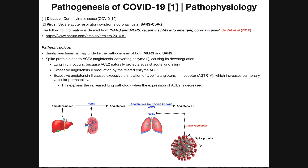The spike protein is going to have another function: it's going to bind to an enzyme called ACE2. ACE2 is an isoform of angiotensin-converting enzyme. When the spike proteins of the virus bind to ACE2, that triggers the downregulation of ACE2 — meaning the levels of ACE2 drop. This is bad for two reasons. First, whenever ACE2 gets downregulated, we tend to see more lung injury.